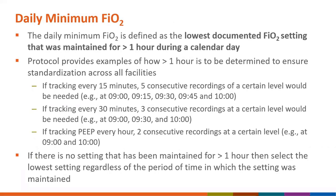The daily minimum FiO2 is defined as the lowest documented FiO2 setting that was maintained for greater than one hour during the calendar day. The protocol provides guidance on how to determine the lowest value when documentation occurs hourly or at more frequent intervals. NHSN is not requiring documentation at any specific interval — this guidance simply provides a standardized way to determine what 'greater than one hour' means.